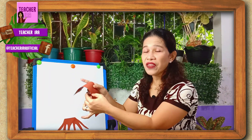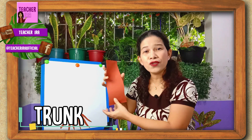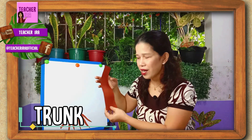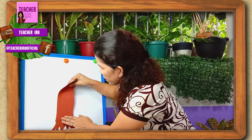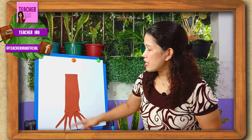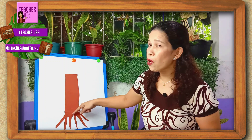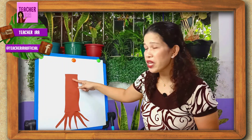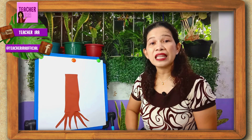And if small plants have a stem, big trees have — you call this a trunk. How do you call this? You say trunk. The same as a stem, it carries all the water and minerals from the soil going up.